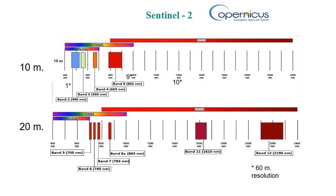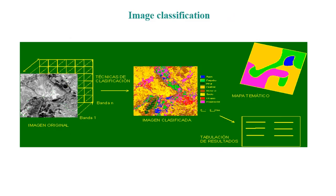Bands 11 and 12 in the shortwave infrared are used for studying the humidity of the surface of the Earth. There are also three images taken at 60-meter resolution, but we are not going to use those in this practice.